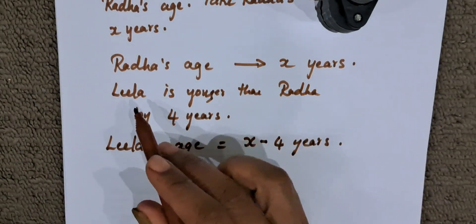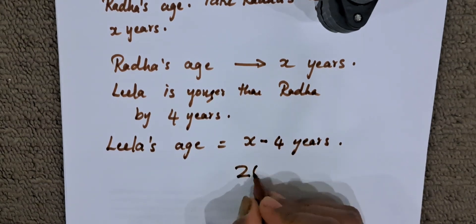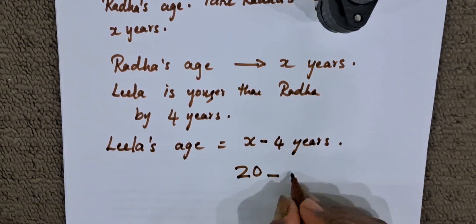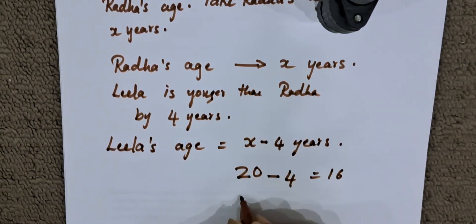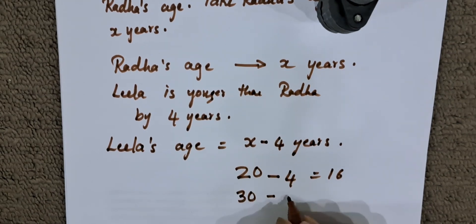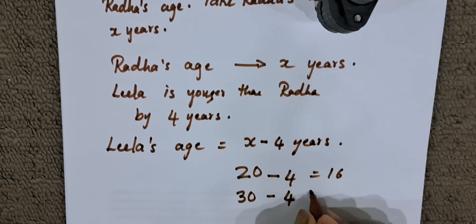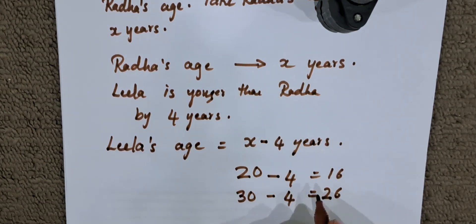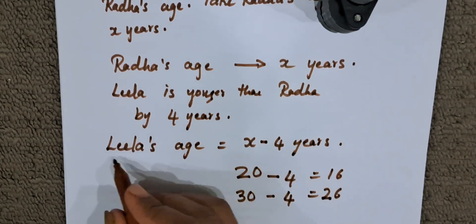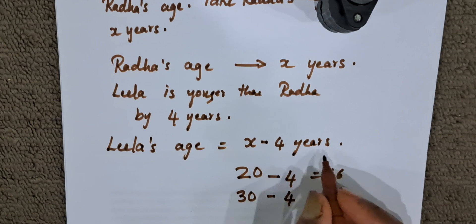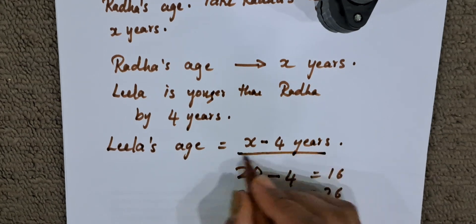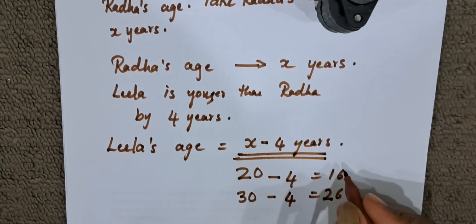Suppose Radha is 20 years, then Leela will be 20 minus 4, which is 16. Suppose Radha is 30 years, Leela will be 26. So Leela's age is X minus 4 years. This is the answer.